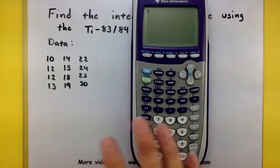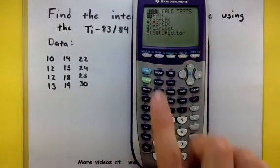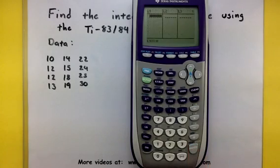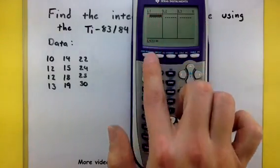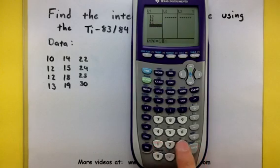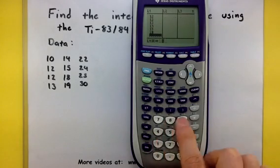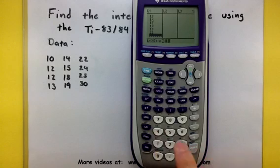So let's first get all of this data into the calculator. To do that, press your STAT button. Notice how Edit is selected, so press Enter and enter all of this data in your first list. Perfect.